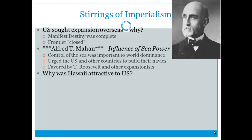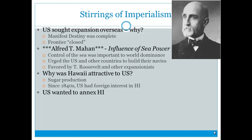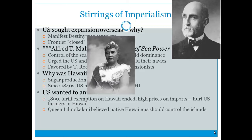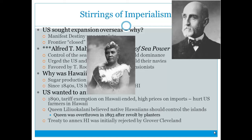The U.S. focused on Hawaii, which was attractive for its sugar production — since the 1840s, the U.S. had foreign interest there. In 1890, the tariff exemption on Hawaii ended, hurting American farmers there. They staged a coup and overthrew Queen Liliuokalani, who believed native Hawaiians should control the islands. The treaty to annex Hawaii was initially rejected under Cleveland, and it won't be until McKinley's presidency that Hawaii joins the Union.